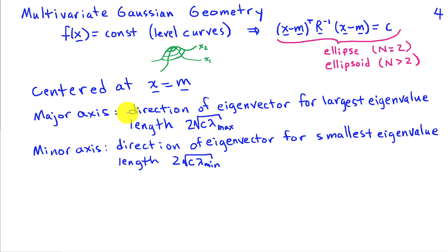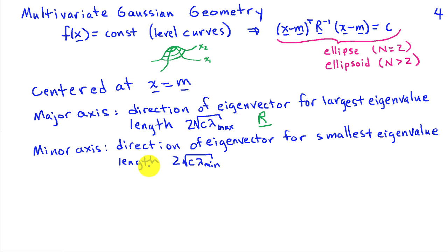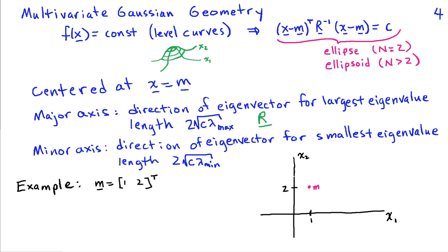The major axis of the ellipse is the direction of the eigenvector of R corresponding to the largest eigenvalue, with length 2 times the square root of c times lambda max. The minor axis is in the direction of the eigenvector associated with the smallest eigenvalue, with length 2 times the square root of c times lambda min. Different values of c give different heights above the surface — the larger c gets, the lower the value of f of x, since this appears as a negative exponent. We're thus interested in the covariance matrix R and its eigenstructure.